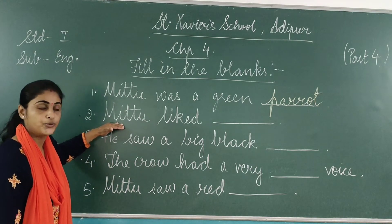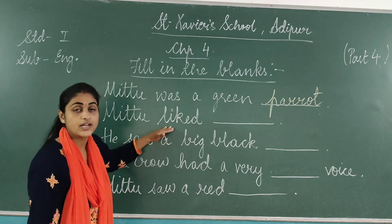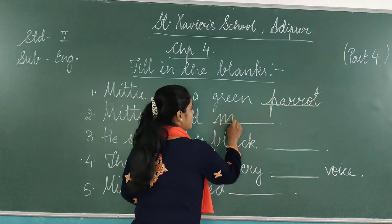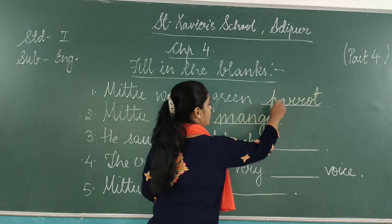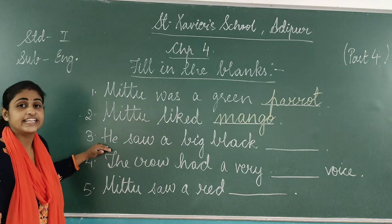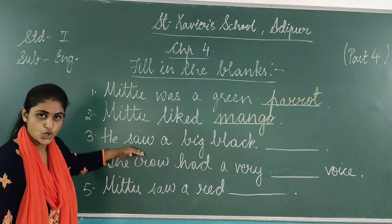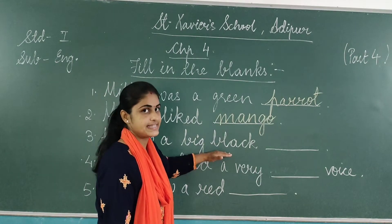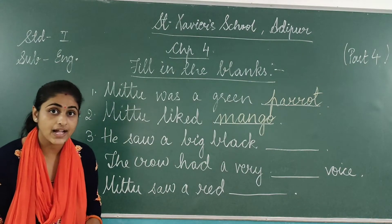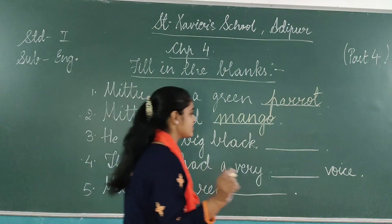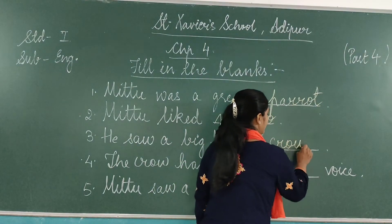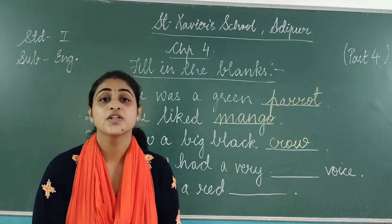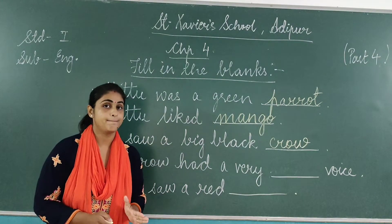Second: M-I-T-U, Mitu is a green parrot. He saw a big black — C-R-O-W — crow. Very good, Naman. He saw a big black crow.